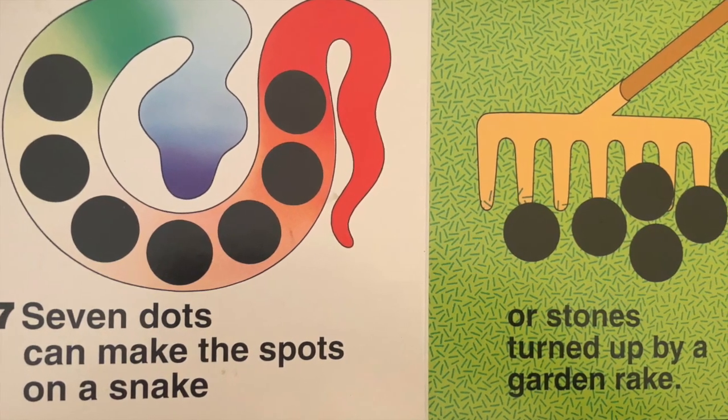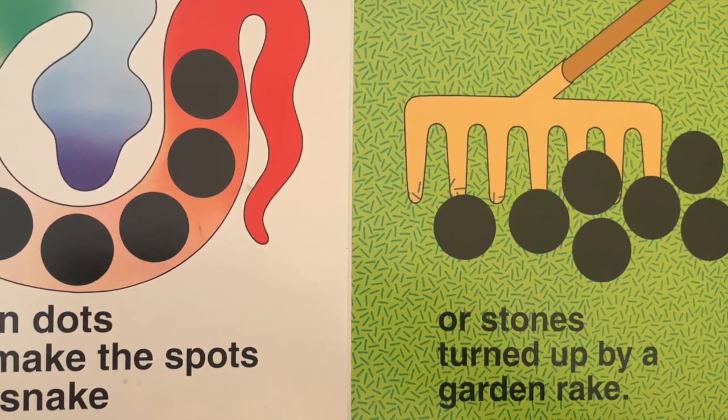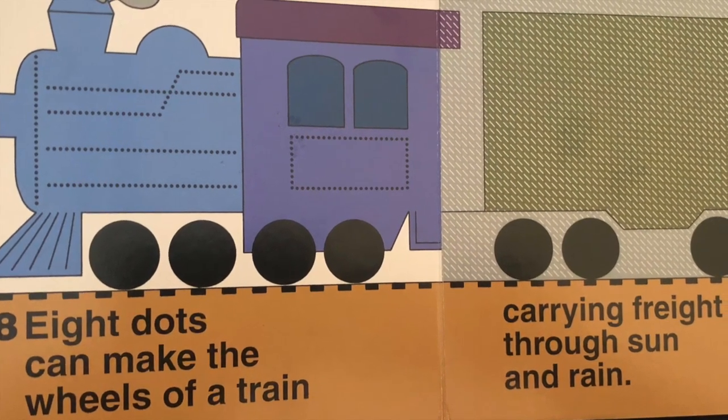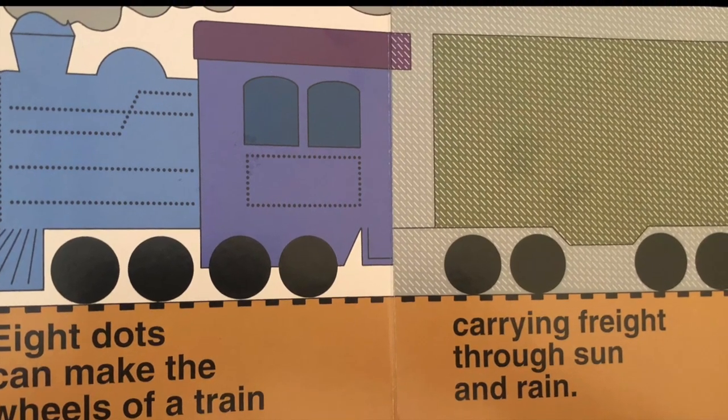Seven dots can make the spots on a snake or stones turned up by a garden rake. Eight dots can make the wheels of a train carrying freight through sun and rain.